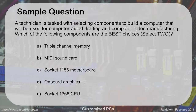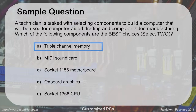Practice question: A technician is tasked with selecting components to build a computer for computer-aided drafting and manufacturing. Which two of the following would be the best choices? Options are: triple channel memory, a MIDI sound card, a Socket 1156 motherboard, onboard graphics, or a Socket 1366 CPU. The answers are A and E — triple channel memory, because it's the fastest memory and CAD/CAM needs lots of fast memory, and the Socket 1366 CPU, which is an Intel processor and the most powerful option listed.